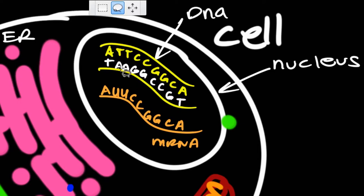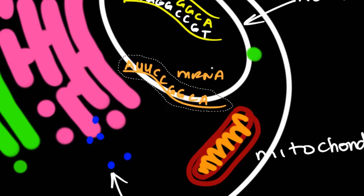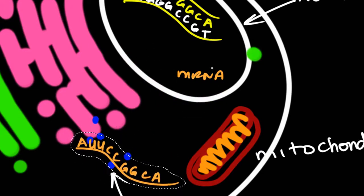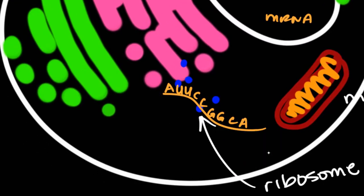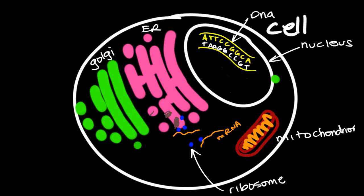Once constructed, the mRNA can then leave the nucleus, taking that information from our genetic code to the ribosomes. The ribosomes can then use that information to construct a specific amino acid sequence, and of course, that builds a protein. In this case, we're actually building a protein that we want to traffic to our cell membrane.